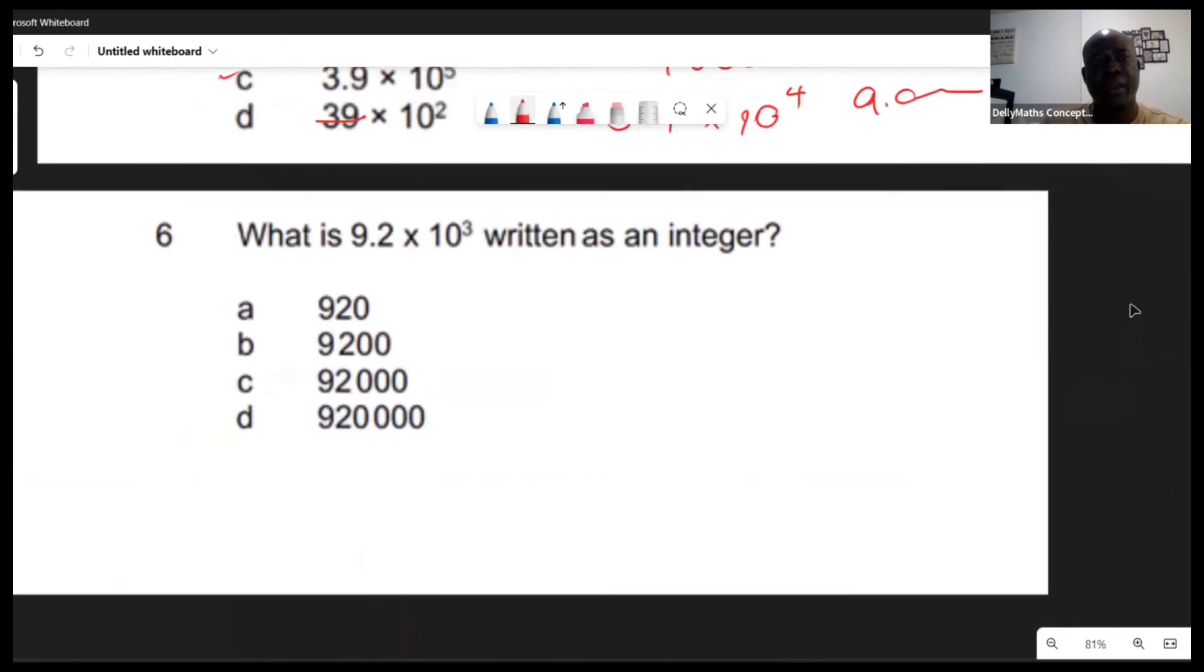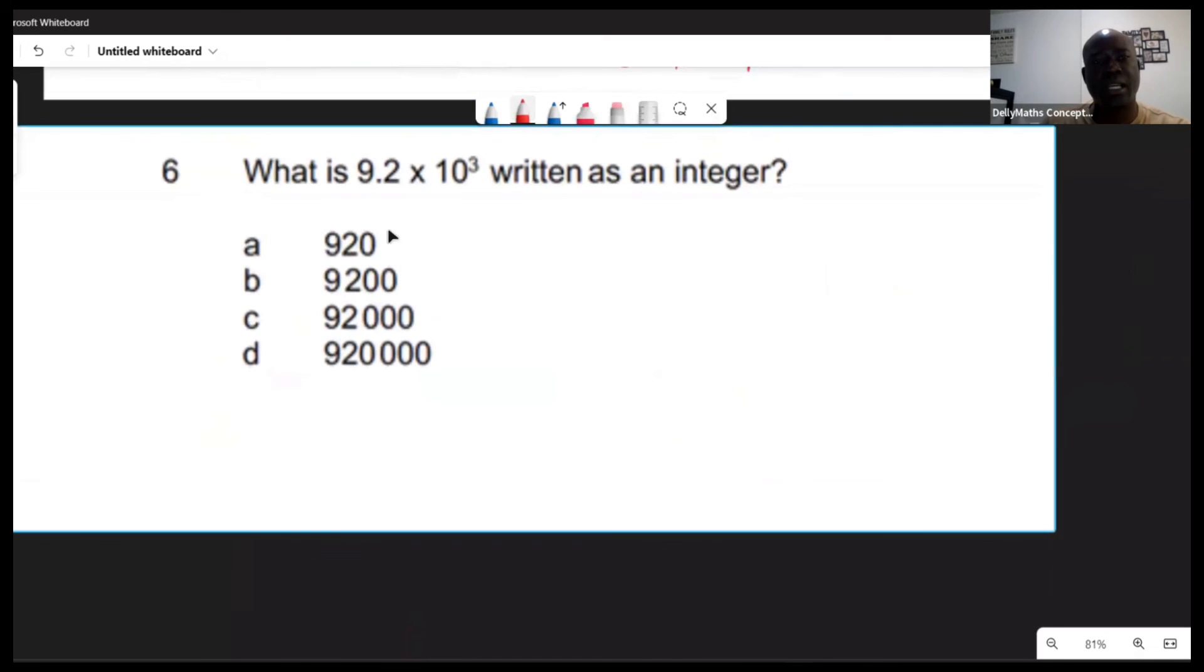Number six says: what is 9.2 times 10 to the third as an integer? In other words, you want to remove this from standard form. So it's 9.2 times 10 to the third. For some, what 10 to the third means - 10 to the third actually means 10 times 10 times 10, and this will give you a thousand. Which means 9.2 must multiply by a thousand.